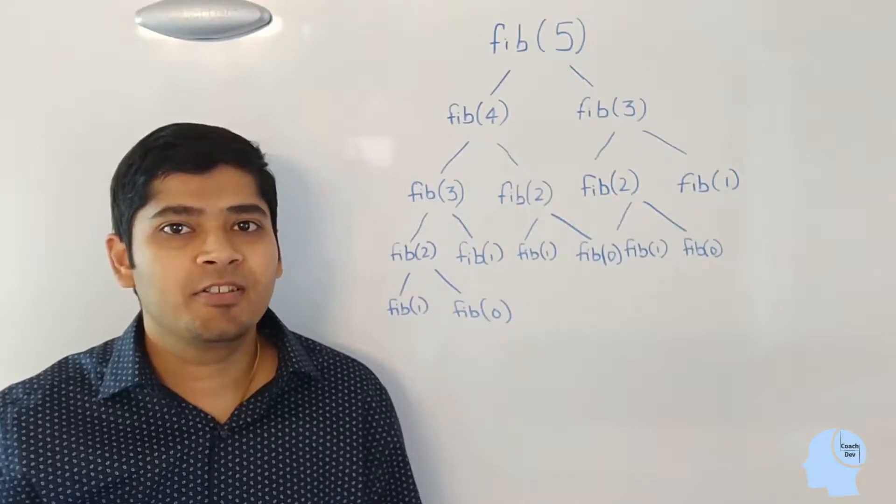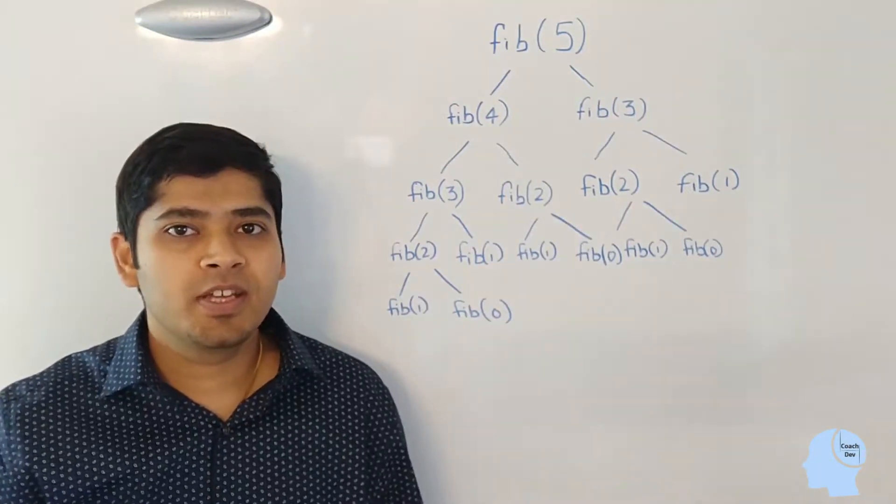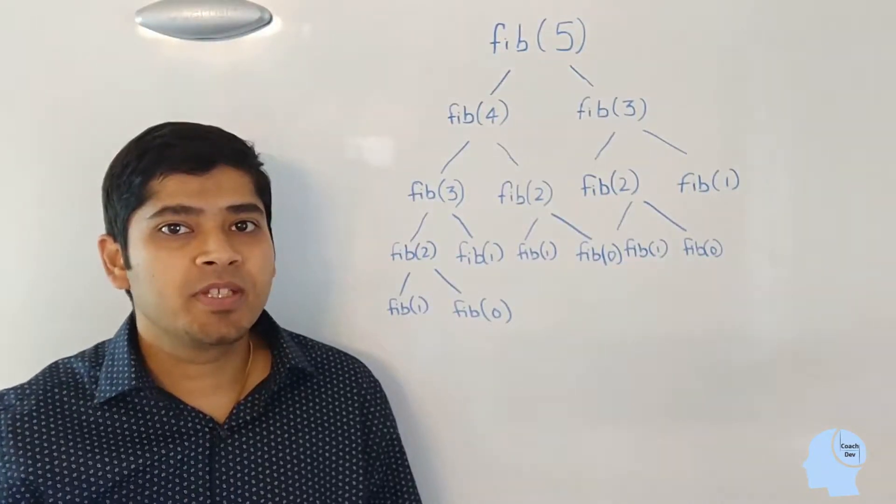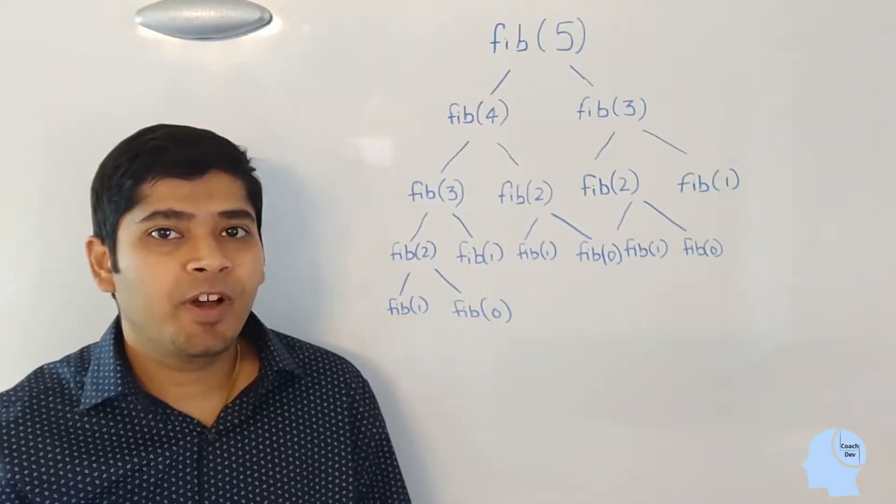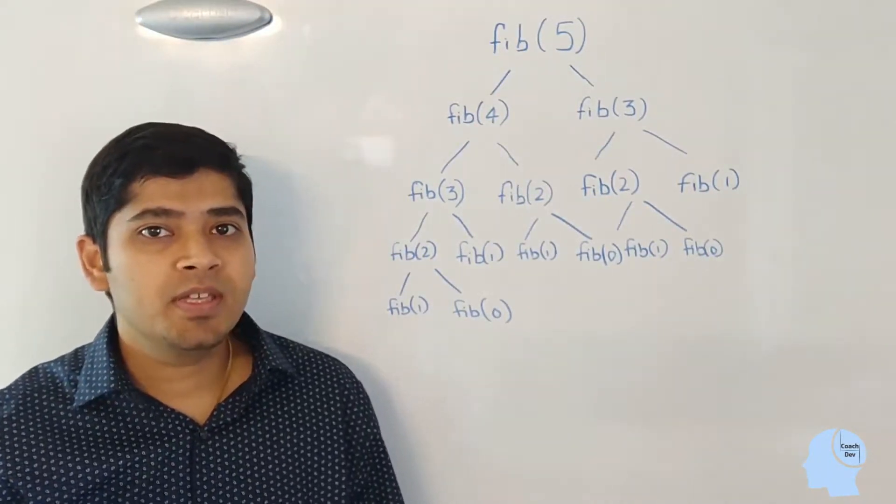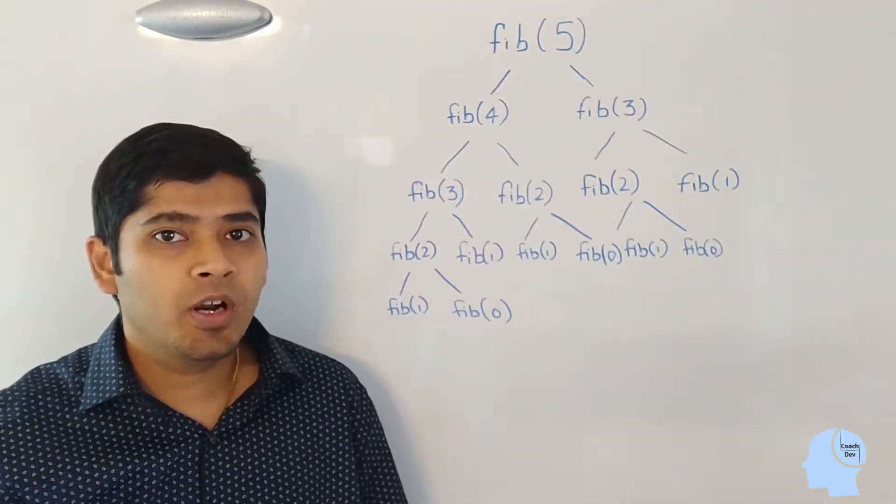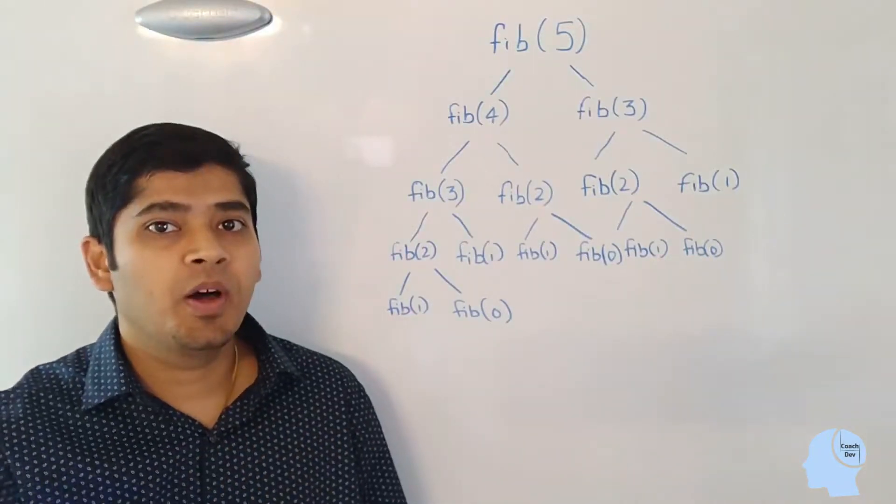If you look at the algorithm closely, you will notice that there is a lot of repeated work. That's why I drew this diagram to compute Fib5. As you can see, how the Fib5 is computed by computing Fib4, Fib3 and so on.